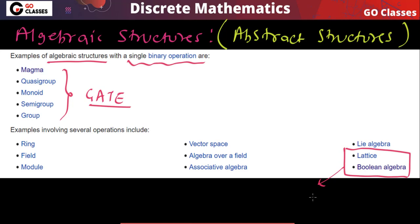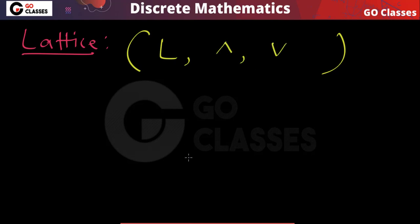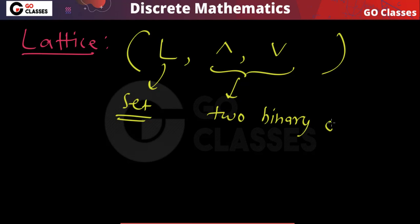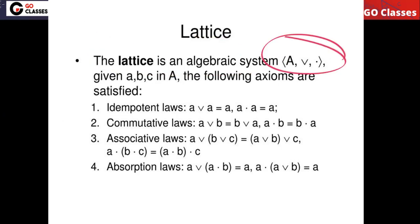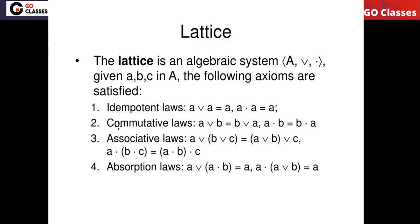We have already seen what is a lattice and what is Boolean algebra. A lattice is an algebraic structure with a non-empty base set and two binary operations: greatest lower bound (glb) and least upper bound (lub). Every lattice satisfies the idempotent, commutative, associative, and absorption properties, as we saw in the lattice chapter.